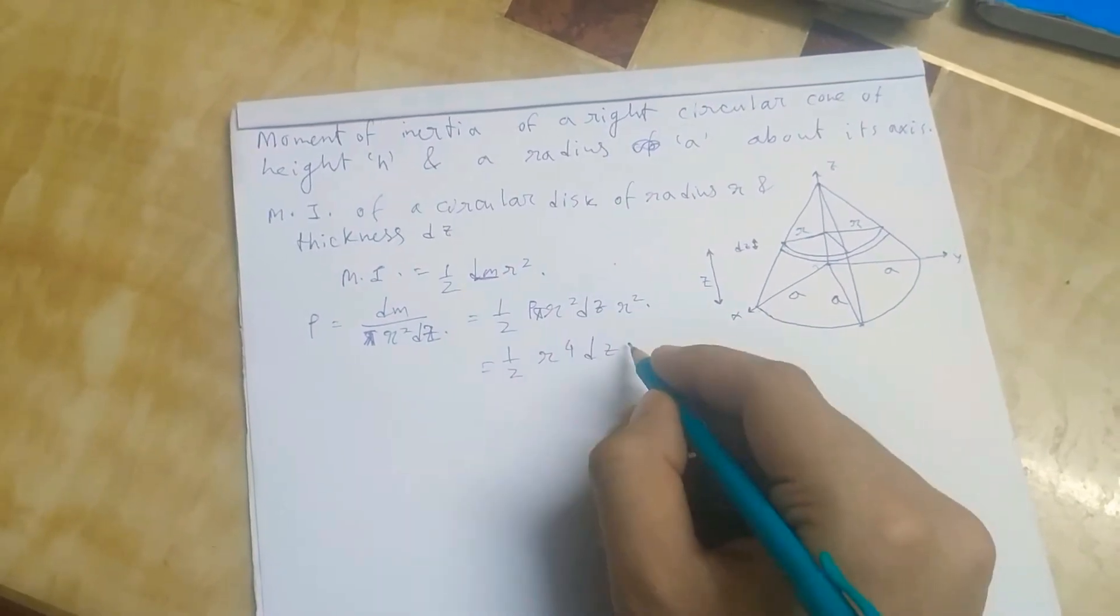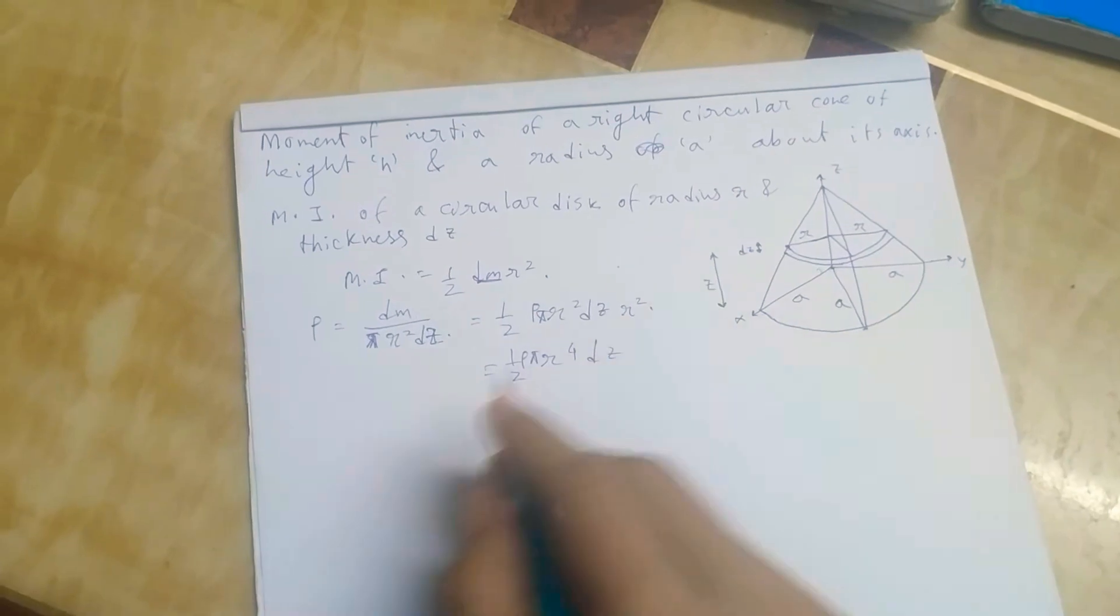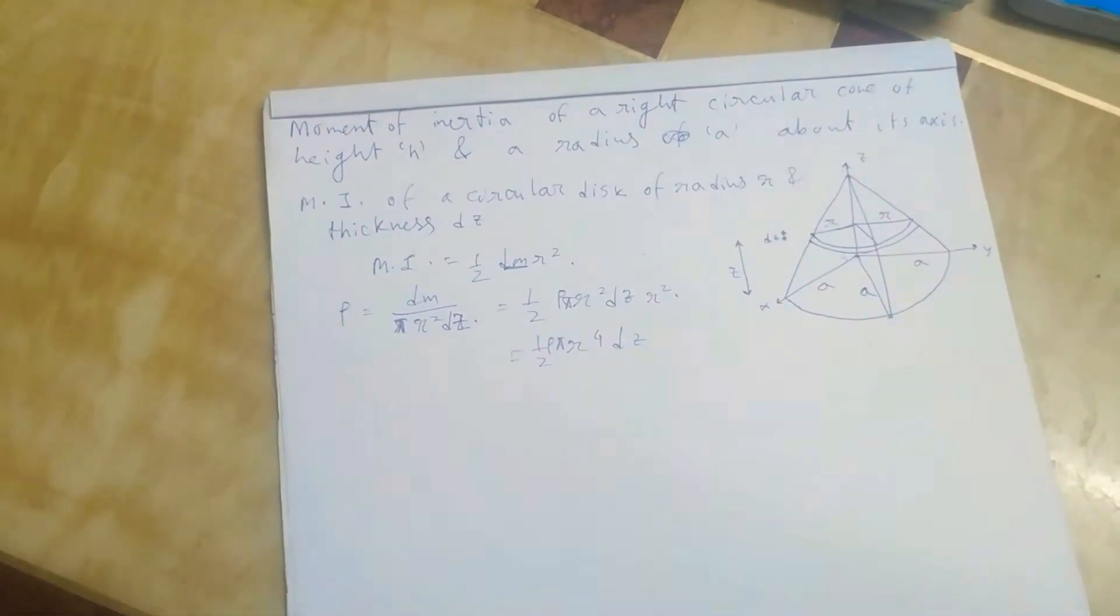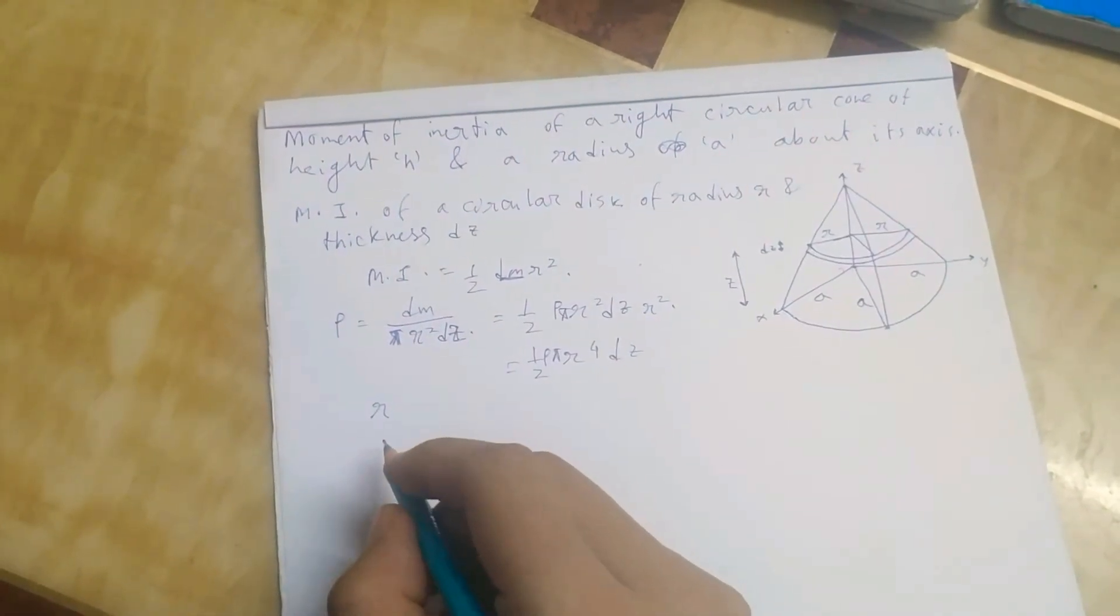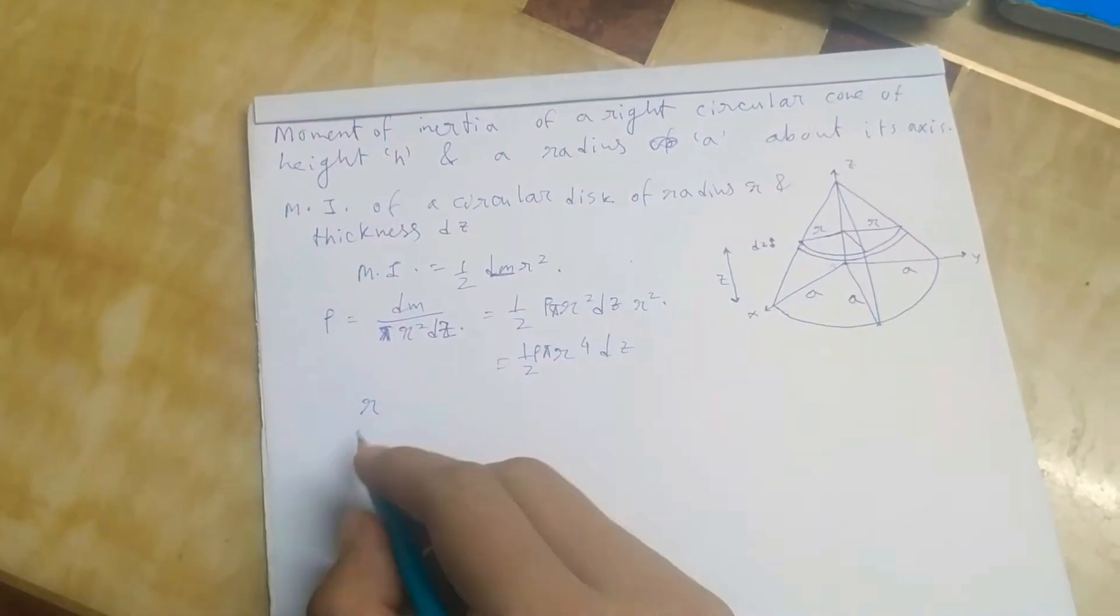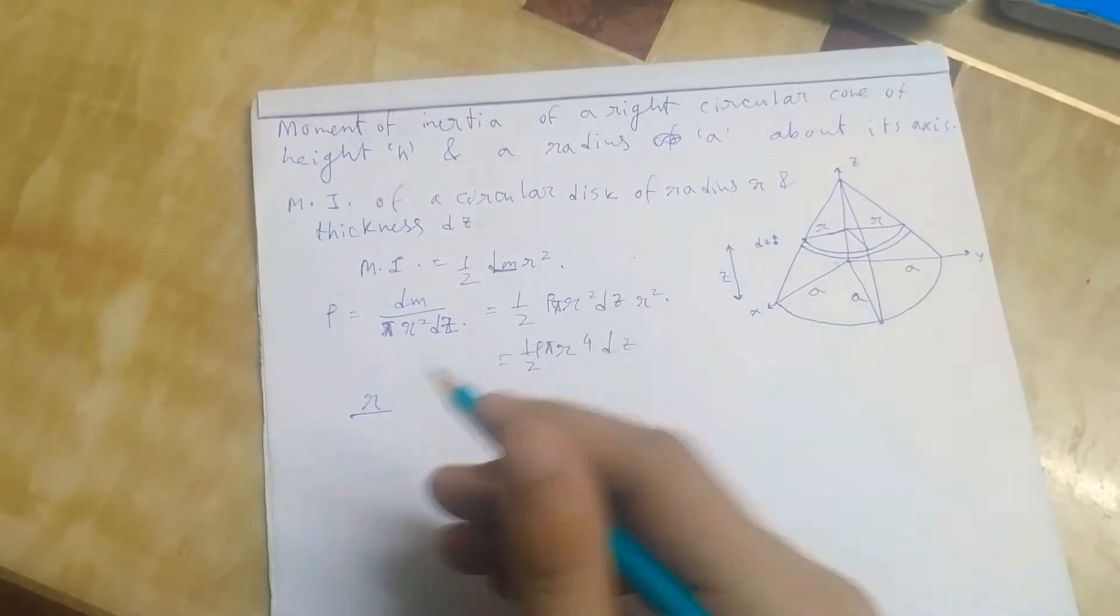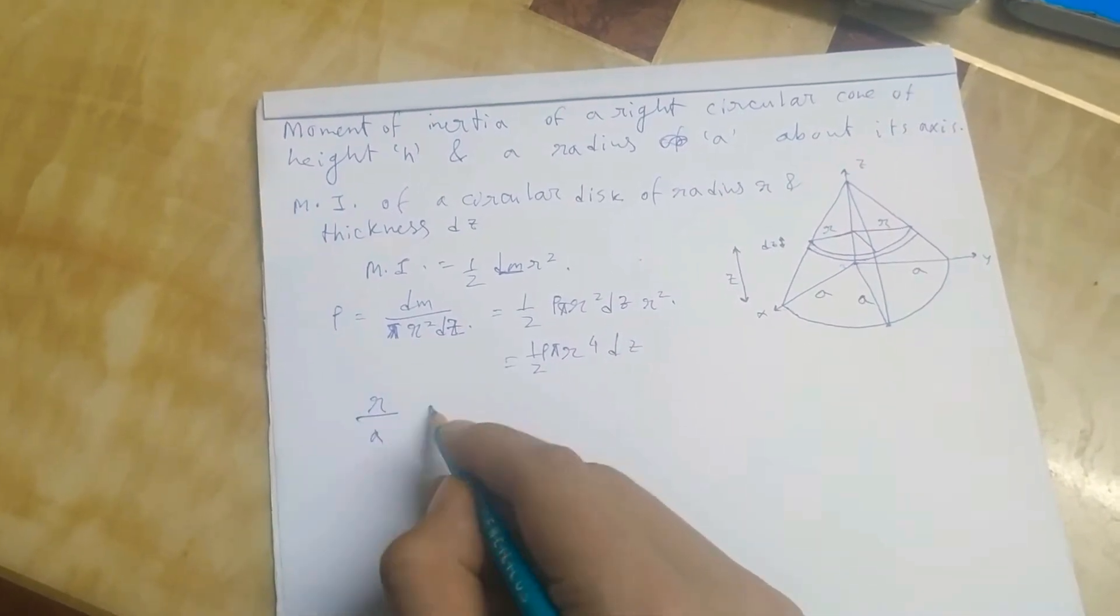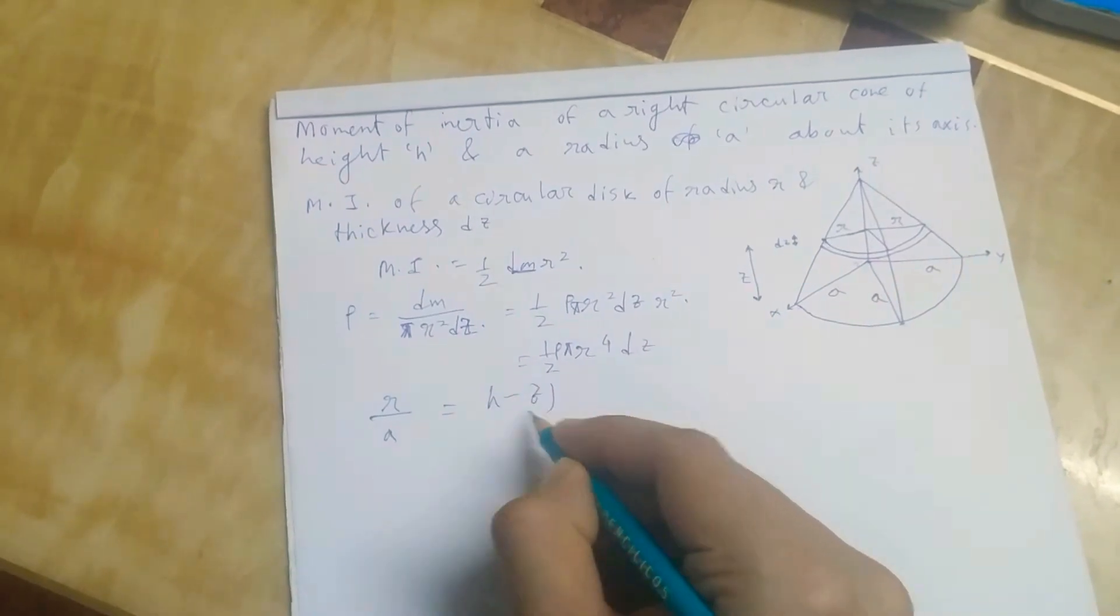It will be like this: half rho pi r to the 4 dz. Now from this picture we can establish a relationship between r and h and also a. The relationship will be like this: the ratio of r to a will be equal to h minus z over h.